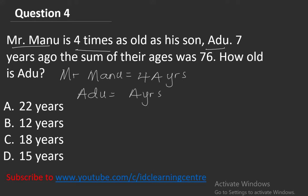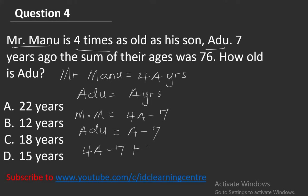Seven years ago, Mr. Manu's age was 4A minus 7, and Adu's age was A minus 7. The question says seven years ago the sum of their ages was 76. So: (4A minus 7) plus (A minus 7) equals 76. We are solving for A — Adu's current age. Combining A terms: 4A plus A gives 5A.